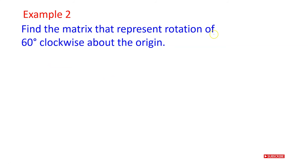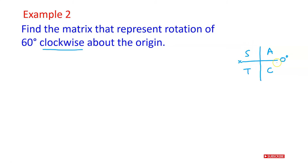Example two: find the matrix that represents rotation of 60 degrees clockwise about the origin. This time we have clockwise. I'll use my CAST diagram. So we have C, A, S, T, and 0 degrees on the x-axis. Going anti-clockwise is a positive movement. Going clockwise is a negative movement. Everything is positive in the first quadrant. Sine is positive in the second quadrant. Tan is positive in the third. Cos is positive in the fourth. If we are going clockwise by 60 degrees, we will be going into the fourth quadrant. Only cos is positive in that quadrant — sine will be negative.